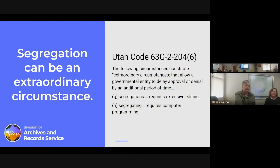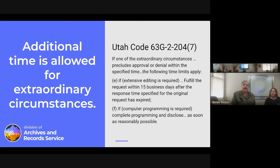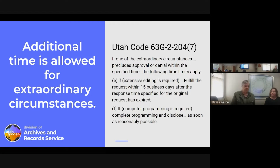The law lists eight specific extraordinary circumstances, and two of those are: one, segregation requires extensive editing — meaning a lot of redaction to do — or two, segregation requires computer programming. In the first case, the extra time allowed is 15 days after the specified response time. For computer programming, you would complete it as soon as reasonably possible. If there's also a voluminous request involved, the governmental entity completes it as soon as reasonably possible.